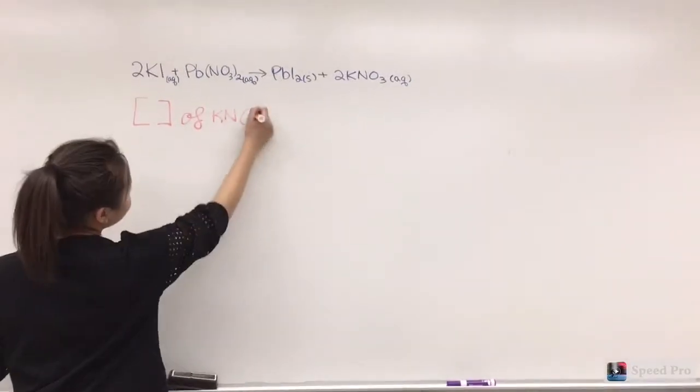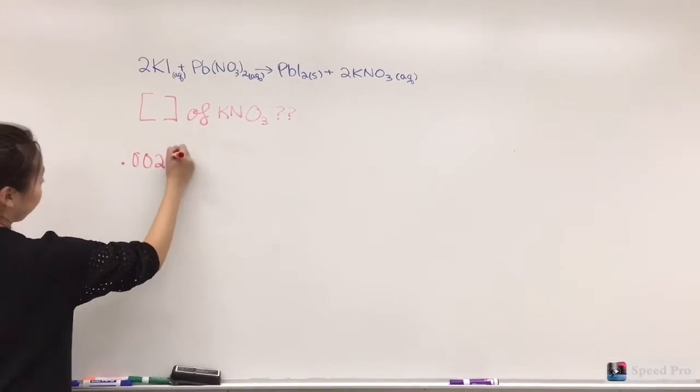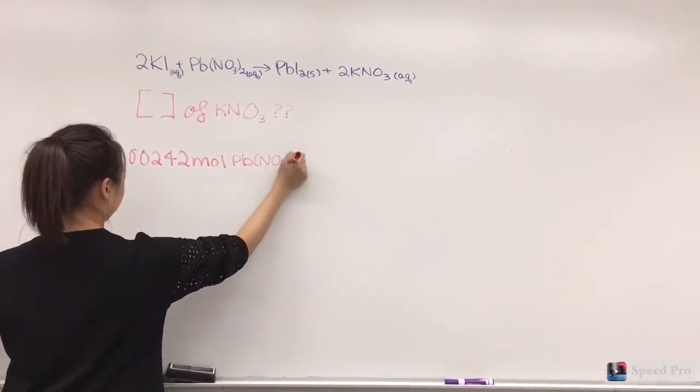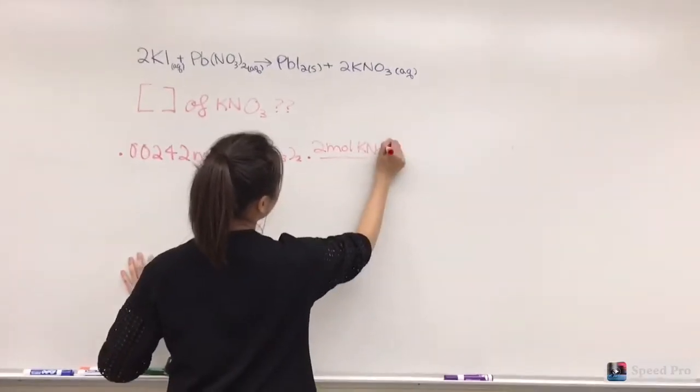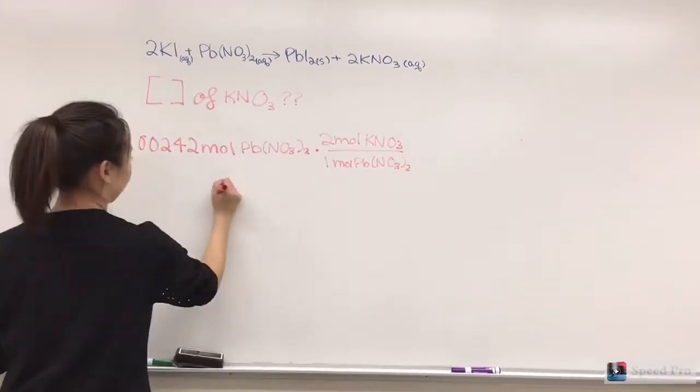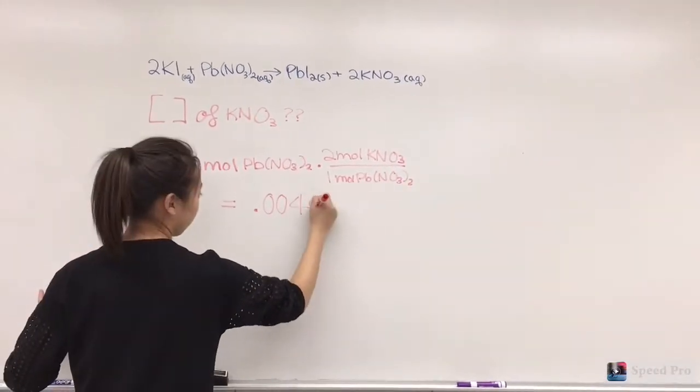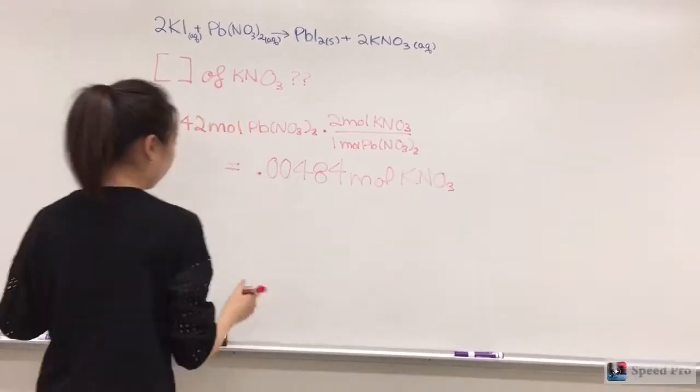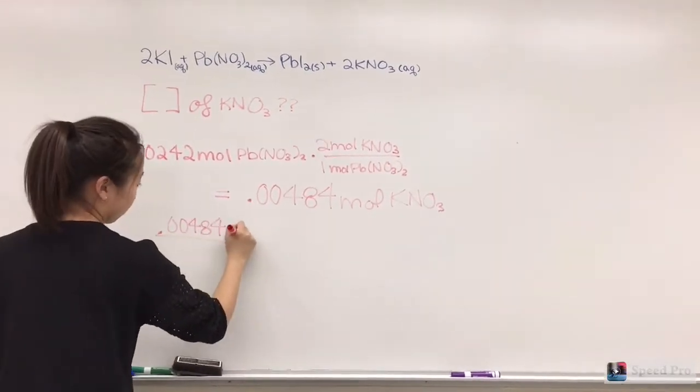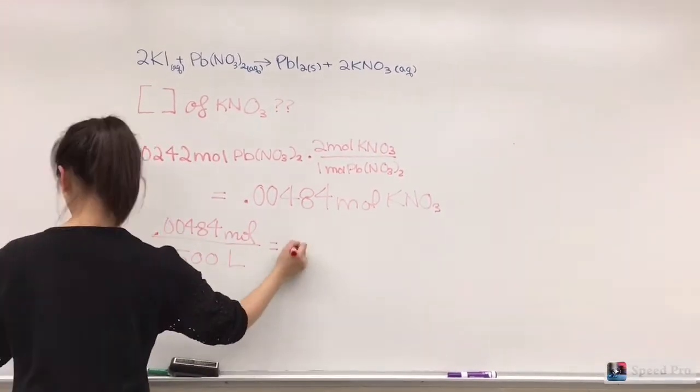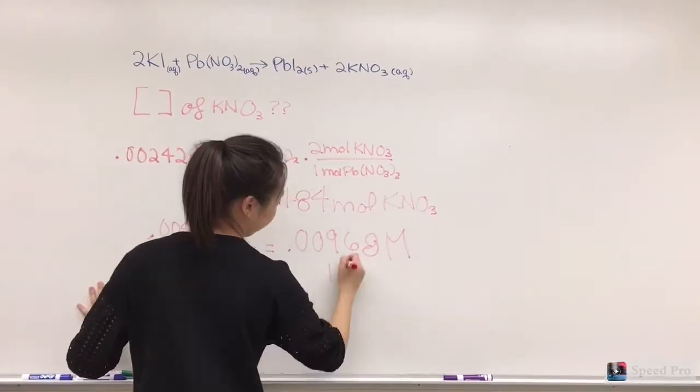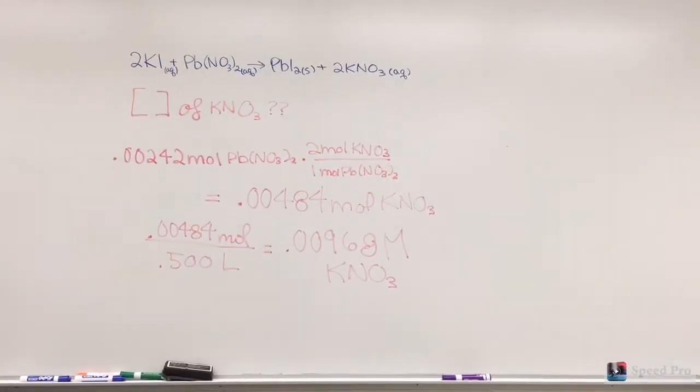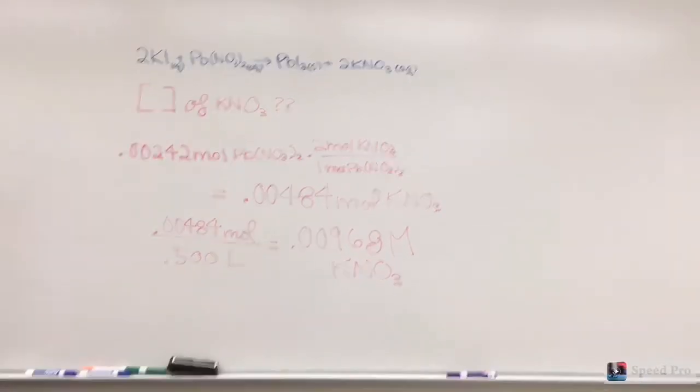The concentration of the end solution, potassium nitrate, was calculated by doing stoichiometry with the limiting reagent, lead-2 nitrate. According to the reaction equation, the moles of potassium nitrate produced was double that of the original moles of lead-2 nitrate, making it 0.00484 moles of potassium nitrate and making the end solution's molarity 0.00968 molar.